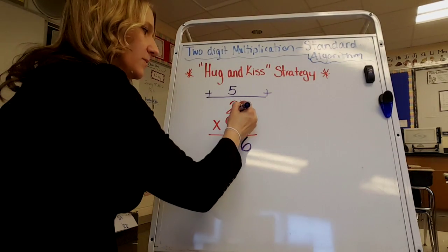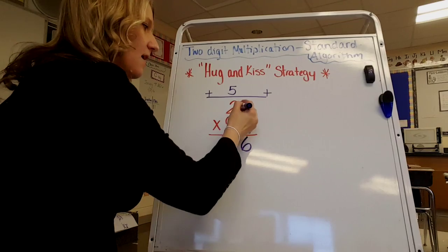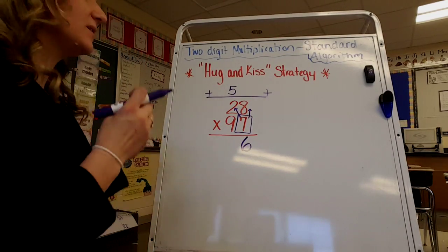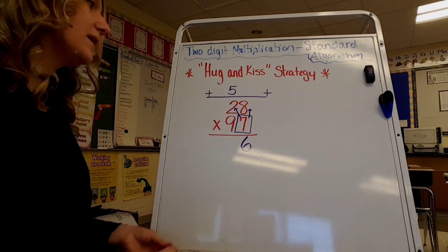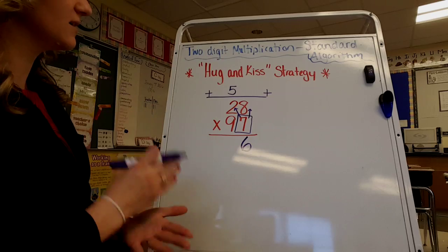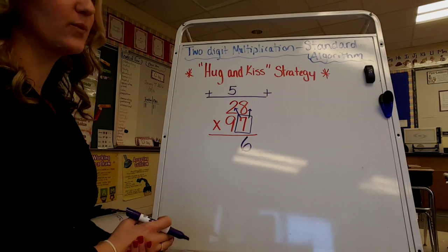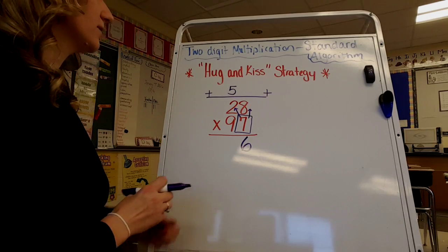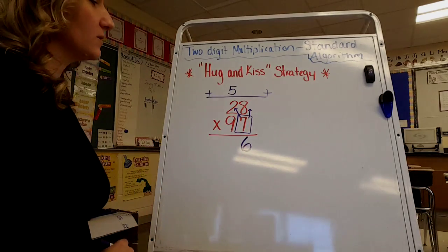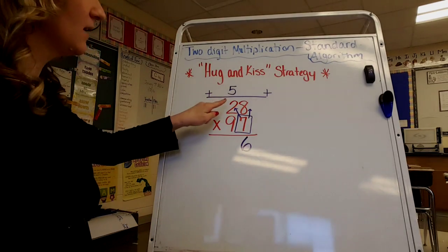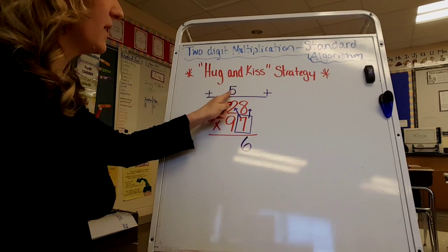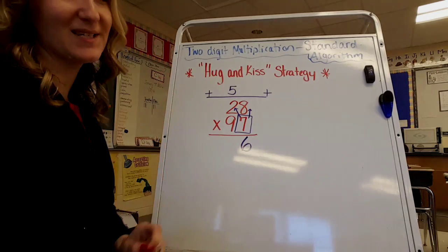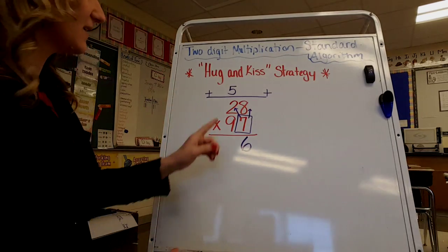Now I'm going to multiply the 7 times the 2. Like I said, it's not going to be 7 times 20. We are saying 7 times 2 — we're just looking at the digits when we're using this strategy. 7 times 2 is 14. The number right above that needs to be added, that's why we put the little plus signs there to remind us.